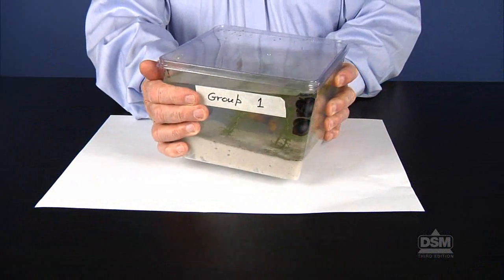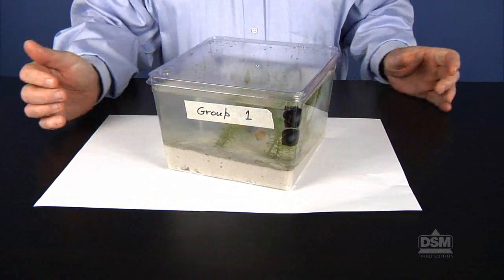Next, divide the class into teams of four and distribute a sheet of white paper to each team. Have students retrieve their aquariums and place them on the paper and ask students to observe the fish in their aquariums for five minutes. If the students observe any behaviors not already listed, add them to the chart.